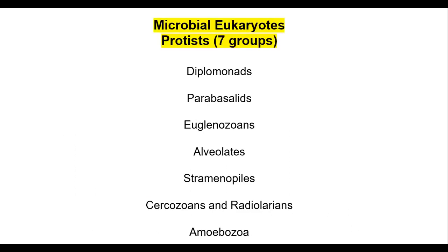Microbial eukaryotes are called protists. Even in ancient times, the second phylogenetic tree recognized protists as a special kingdom. These are microbial eukaryotes with seven groups. You've probably heard of amoebozoas — everyone knows amoeba. There are also radiolarians and cercozoans, stramenopiles, and alveolates. Euglenozoa includes Euglena viridis, which has a flagellum at the end — in Serbian, informally called a 'whip.' There are amusing memory techniques for these names.